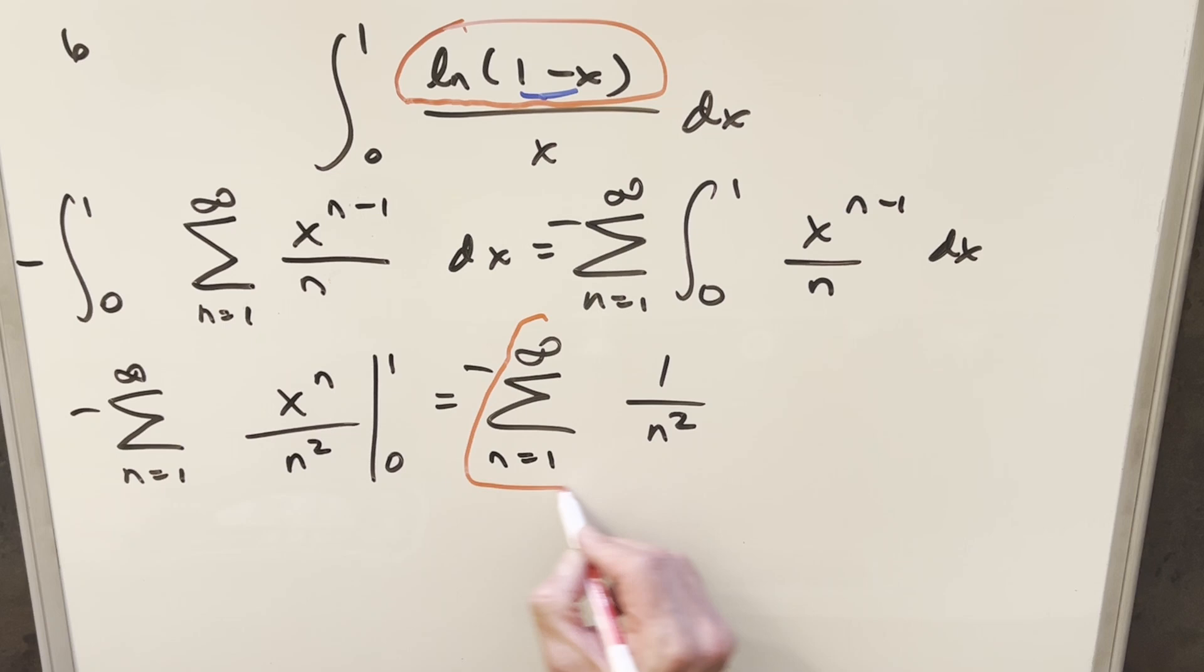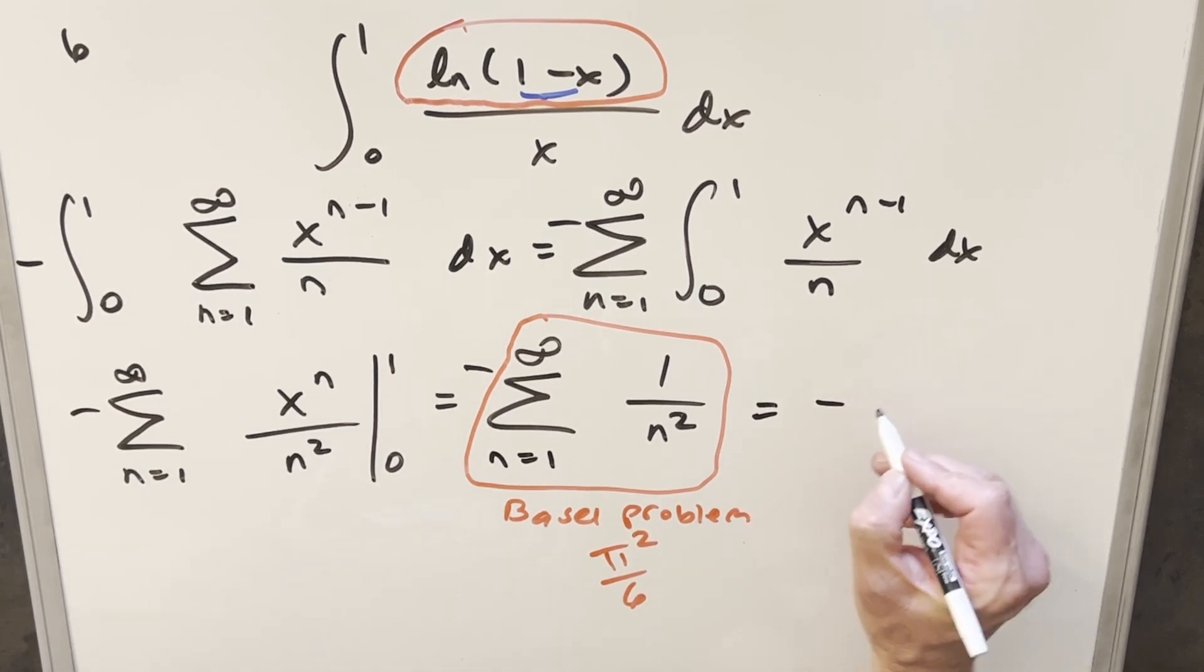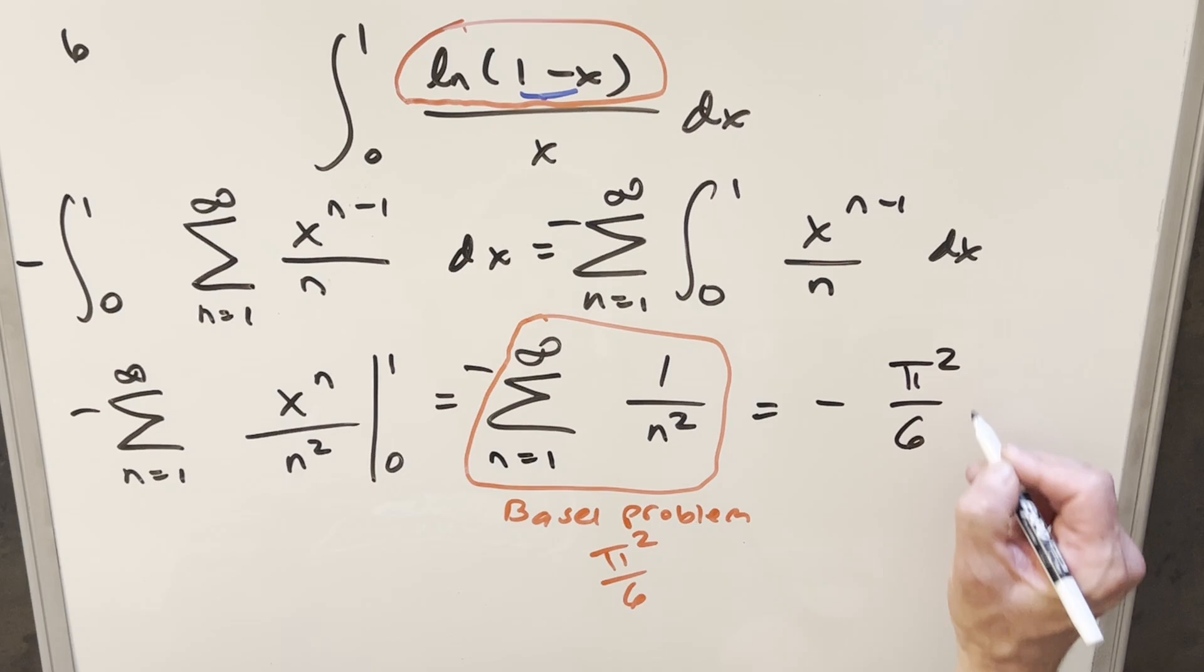But then to finish this off, this here is a really well-known sum. This here is actually the Basel problem. So for this, we just have a well-known value. It's just pi squared over six. So putting it all together for my final solution of this, we just get minus pi squared over six.